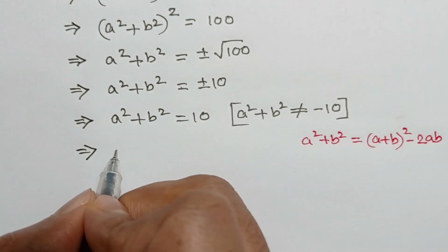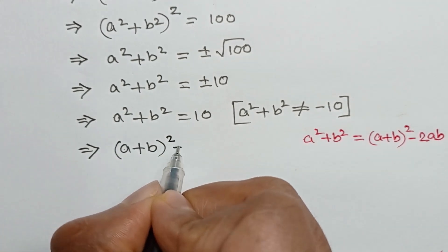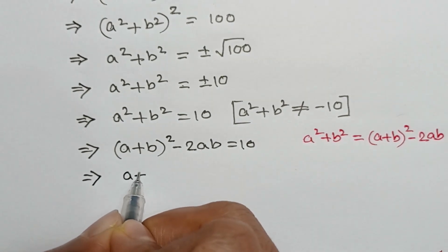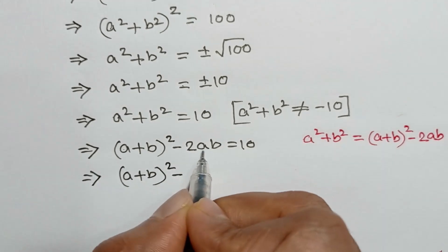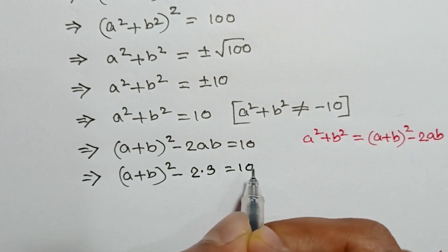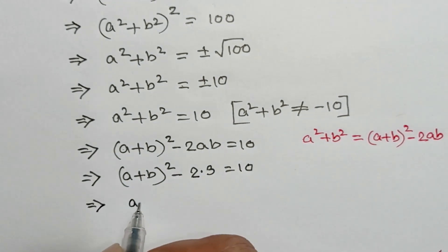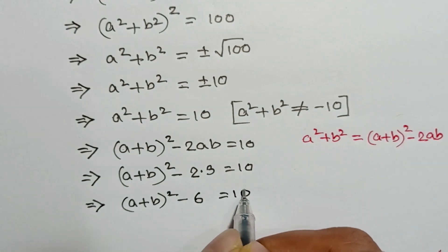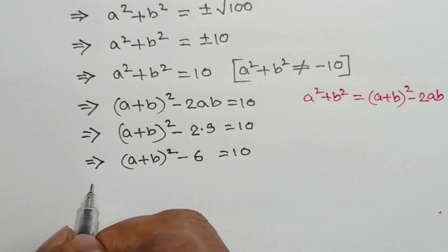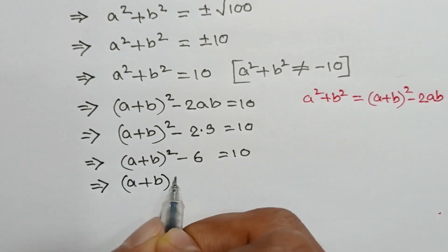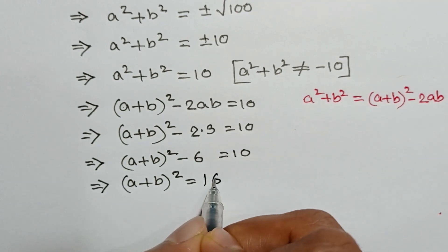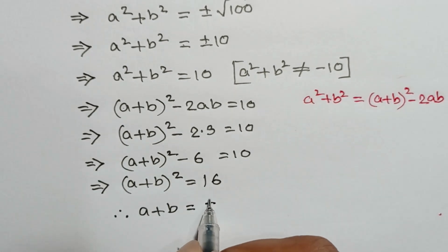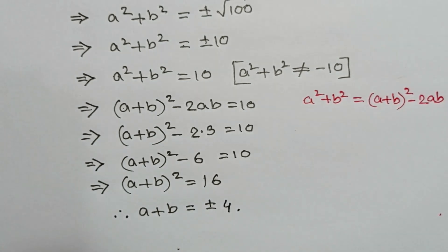Applying this, a plus b whole square minus 2 times ab is equal to 10. Putting ab equal to 3, we get: a plus b whole square minus 2 times 3 equals 10, so a plus b whole square minus 6 equals 10. Therefore a plus b whole square is equal to 16, and taking square root on both sides, a plus b is equal to plus or minus 4. This is the value of a plus b.